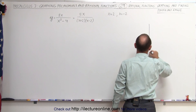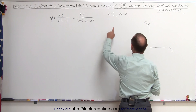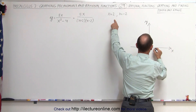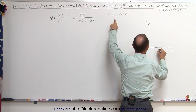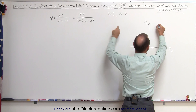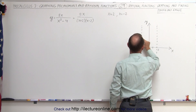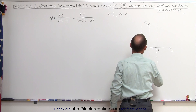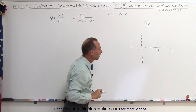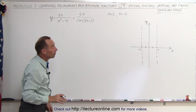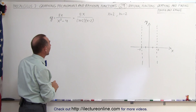So those will cause two vertical asymptotes when we graph this function. Here's our y-axis — notice x = 2 and x = -2 is where we find the two vertical asymptotes. There's one and there's the other, giving us three regions.